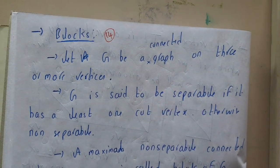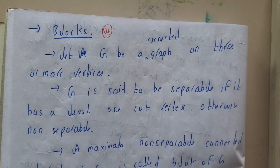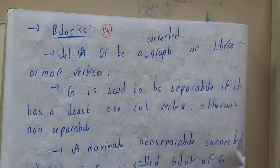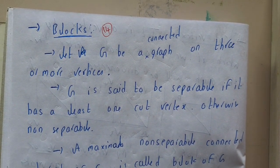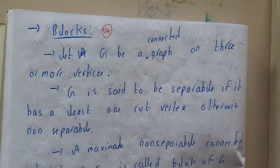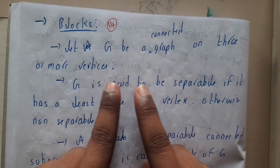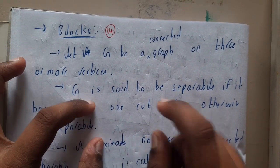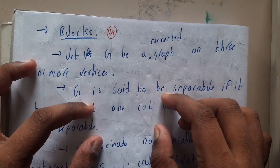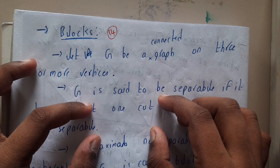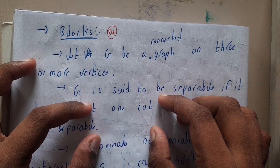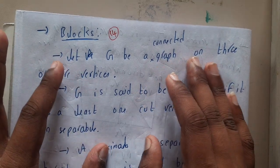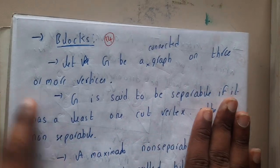Hello guys, we are back with our next lecture. In this lecture, let us go through blocks. This concept will also be coming under connected and disconnected. Basically, blocks are nothing but whenever you disconnect a particular graph and it becomes two sub-graphs which further cannot be divided or disconnected — those things are nothing but blocks.